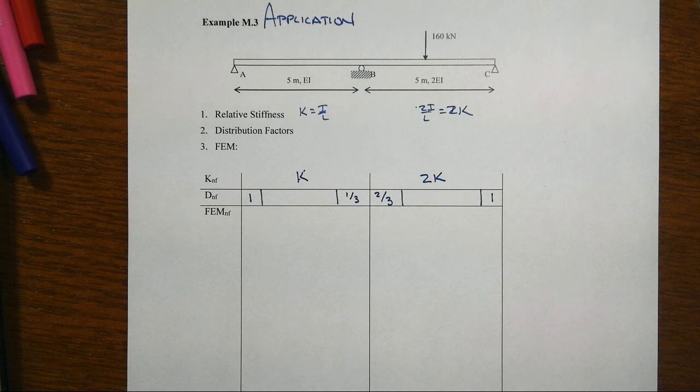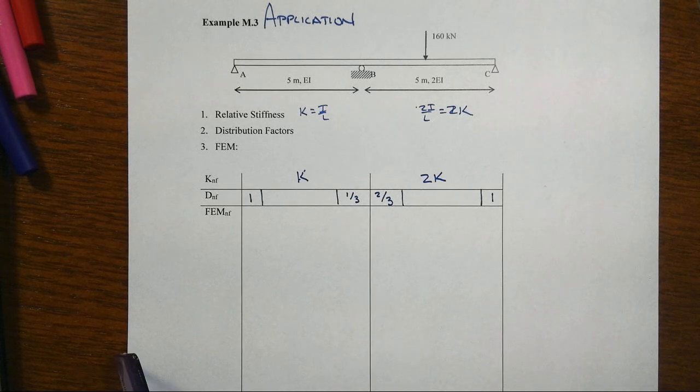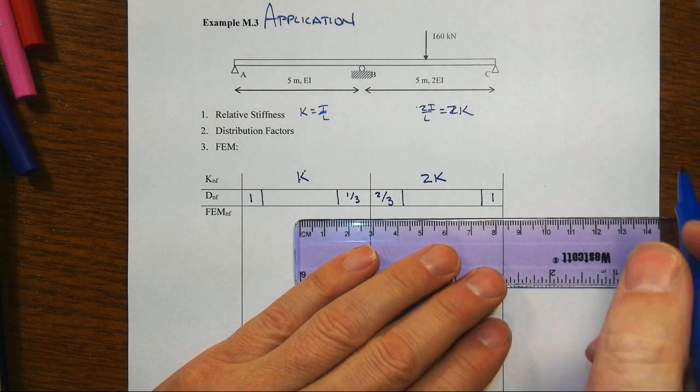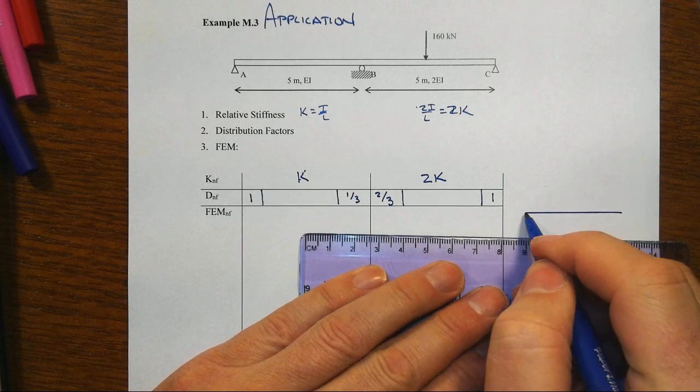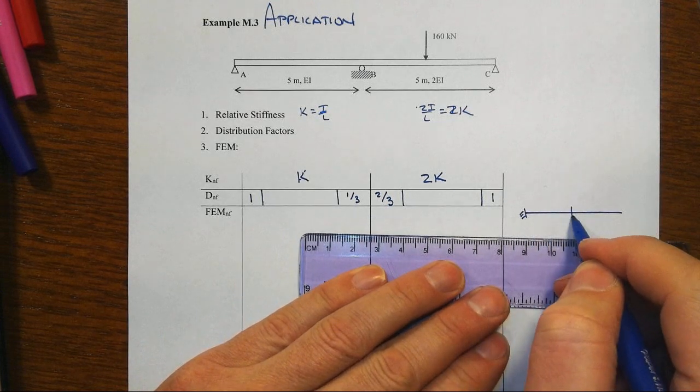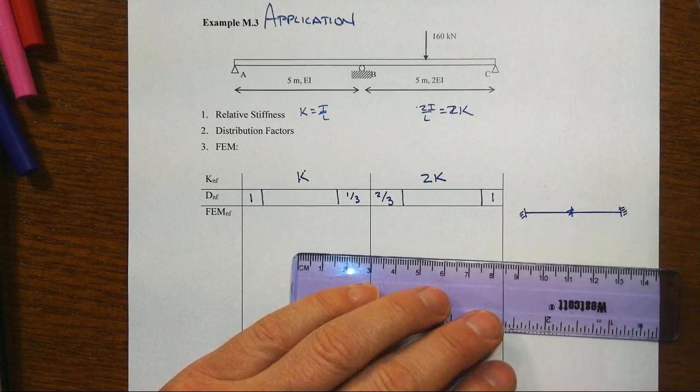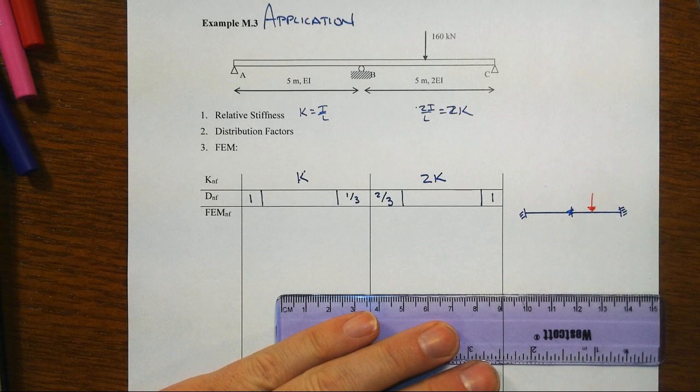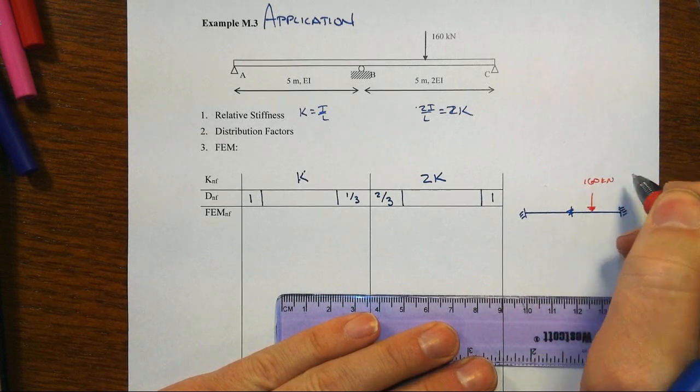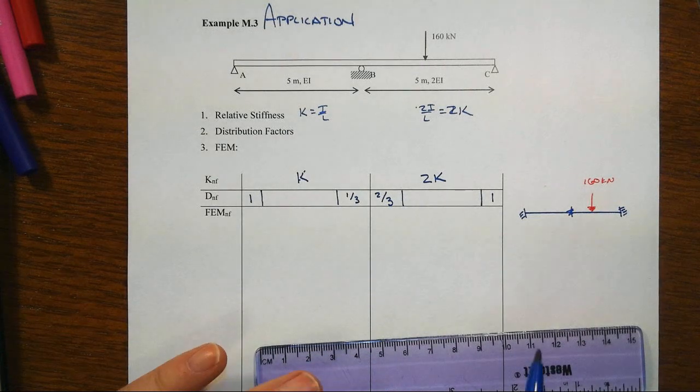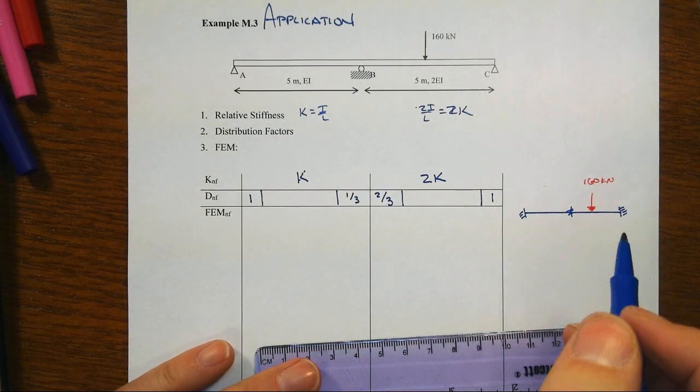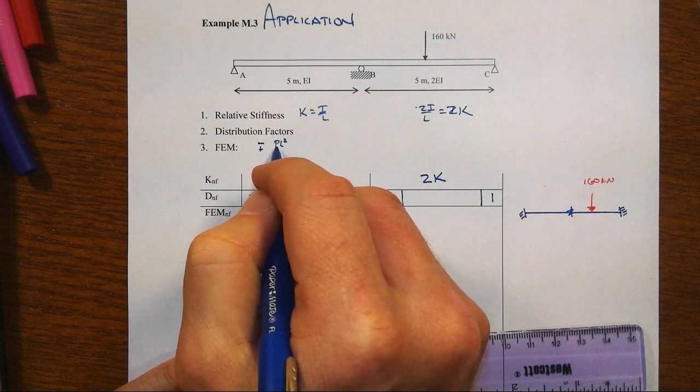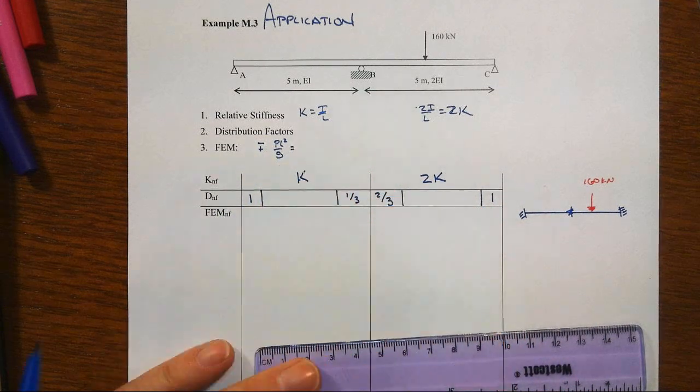Now this next step of these fixed end moments, the physical analogy that we're playing with is that we're going to come in and temporarily lock down each and every one of the joints, including that middle. And we're going to impose whatever all of the member forces are. And so we got 160 kilonewtons. That's going to create fixed end moments.